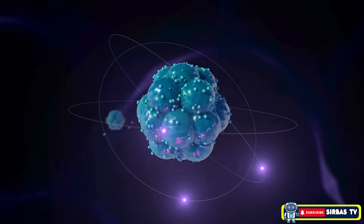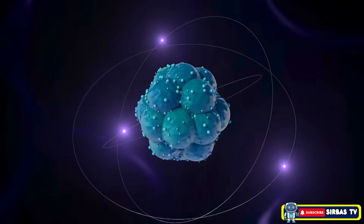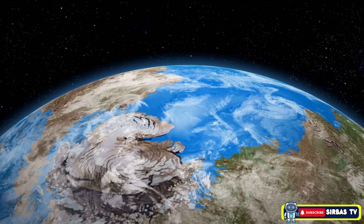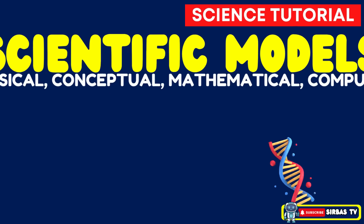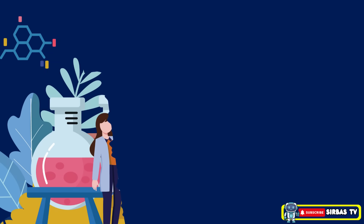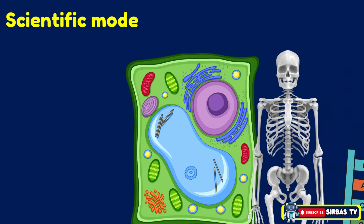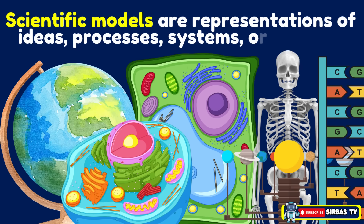Imagine trying to study something that's invisible to the eye, or something that's too huge to touch, like the whole planet. Tricky, right? That's why scientists use scientific models. They are like science's secret tools. Scientific models are representations of ideas, processes, systems, or objects.